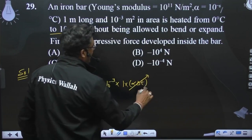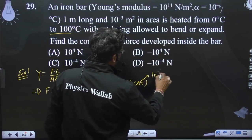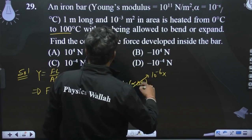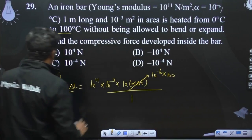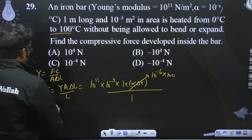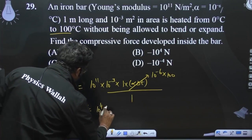So this is what I write. Alpha is nothing but, here we have 10 to the power minus 6 into 100 divided by 1. So when you calculate this, you are getting F comes out to 10 to the power 4 newton. So this is very simple.